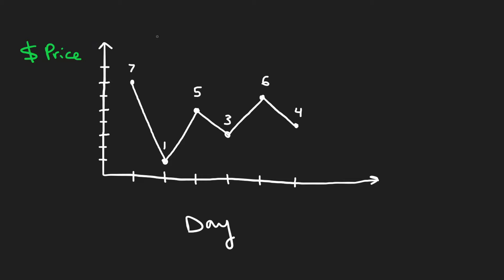forget about the algorithm. When would we want to buy and when would we want to sell if we could do as many transactions as we wanted? And what would be the max profit that we could possibly get in that case? Well, take a look on day one. The price is seven. Should we buy or should we sell?